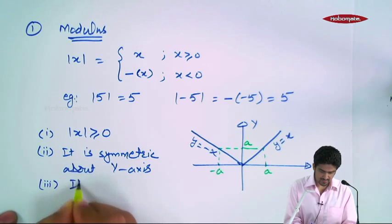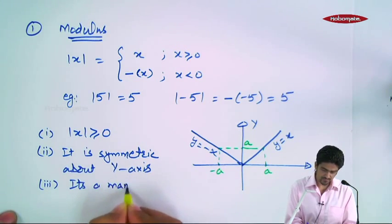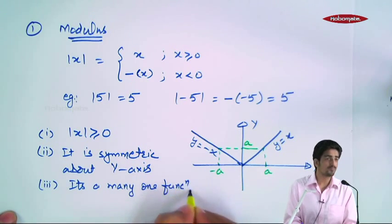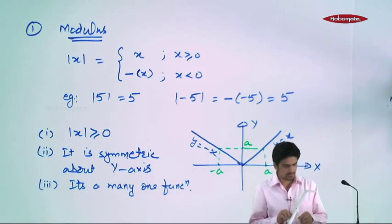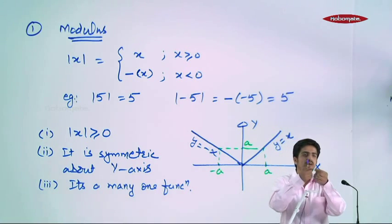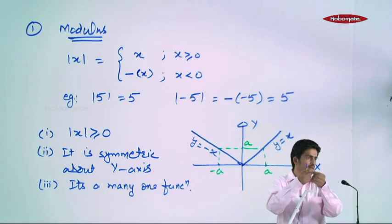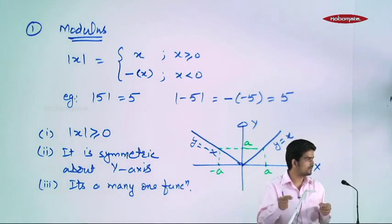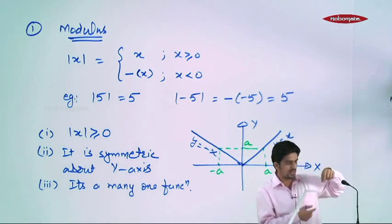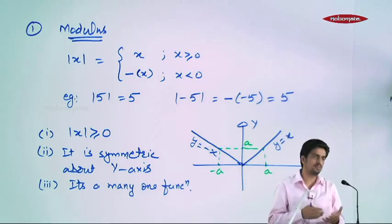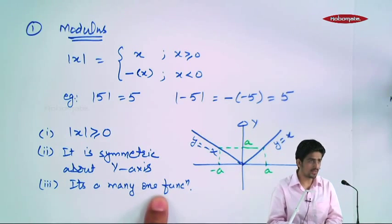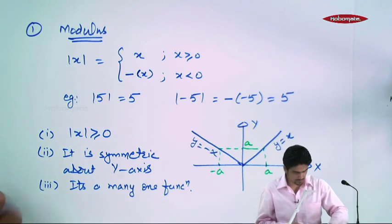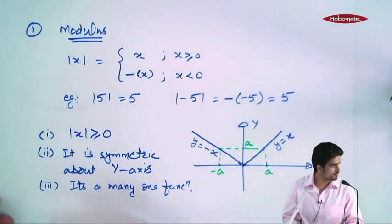Clearly, it's a many-to-one function. Many-to-one function kya tha? Jab do, ya teen, ya chaar ka same image aa raha ho. One-to-one hota agar ek ka ek image, doosare ka doosara image — alag-alag, same nahi aane chahiye. Agar bahut se elements ka ek hi image aa jaye, usse kehte hain many-to-one. So yeh many-to-one hai — do elements ka same image aayega.